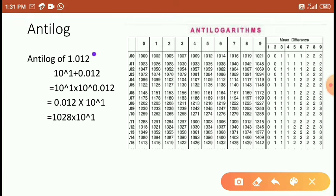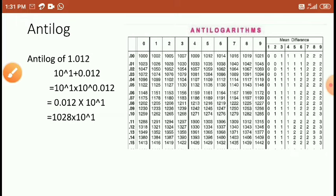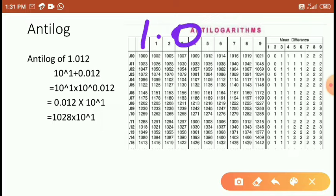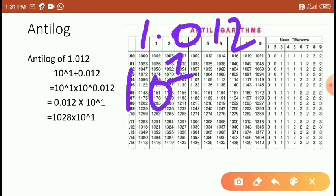If you want to find the antilog, in this case whatever 1.012 is there — written as 10 to the power of 1 — the point before the digit, whatever the digits are, either 1, 2, or 3, they are written as 10 to the power of 1.